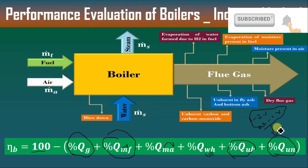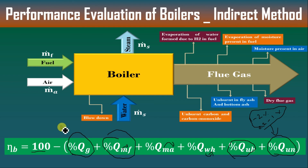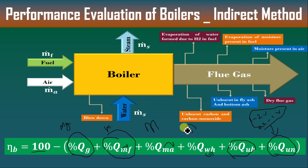In the next lecture, we will discuss how to find the mass of dry flue gas, mass of moisture present in fuel, mass of moisture present in air, and the hydrogen present in fuel — in case these parameters are not given in the question. If you like this video, kindly like and share with your friends. If you have any doubts, kindly post in the comments and I will reply. I will also provide the material. Thank you.